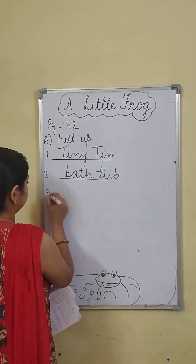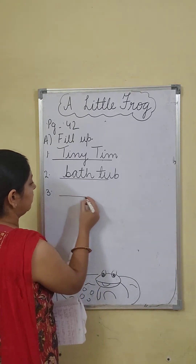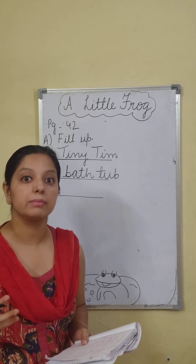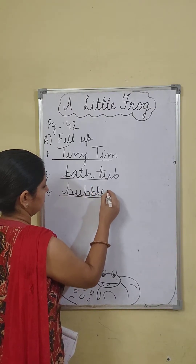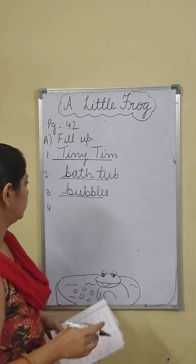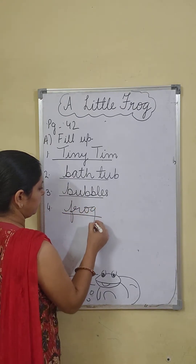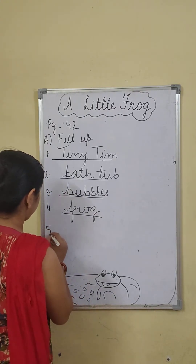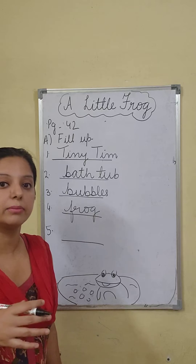The frog had a dash in his throat — at the end of the poem, uske throat mein se kya aaya tha bahaar? Bubbles. The dash drank up all the water — kisne saara paani pi liya tha? Frog ne — the frog drank up all the water. The frog gobbled up the dash — usne kya ekdum se kha liya tha? He ate up the soap.